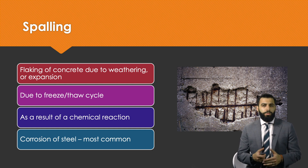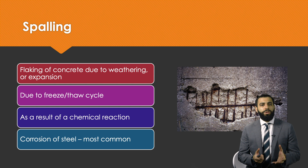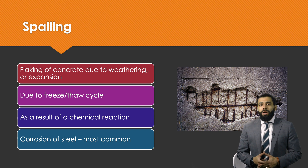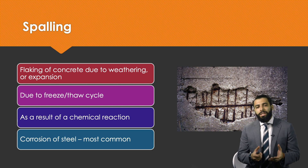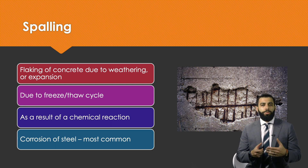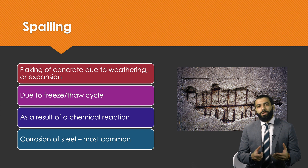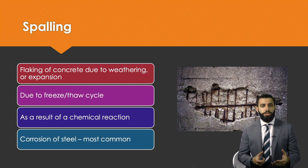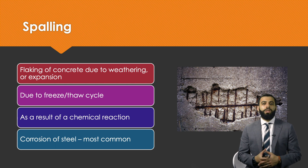The second defect form is spalling, shown in the image. This is where bits of concrete start to flake off. It can be due to weathering action, but mostly it's due to expansion of the concrete. In most cases, spalling happens when the reinforcement corrodes — the resulting rust has a large volume, which causes the concrete to expand and pieces of concrete begin to flake off the element.